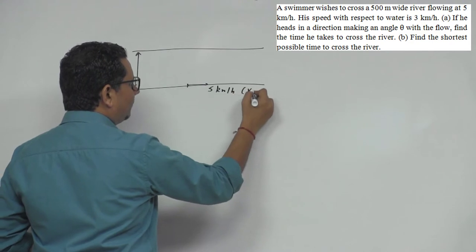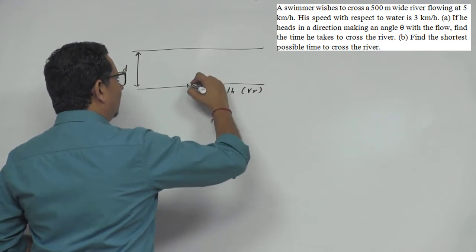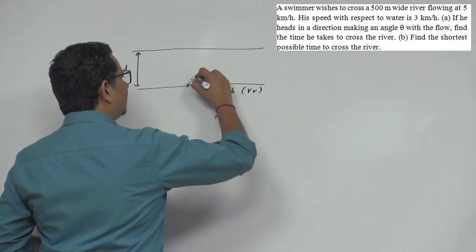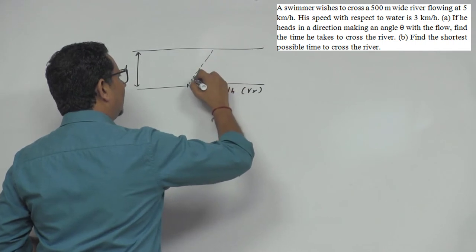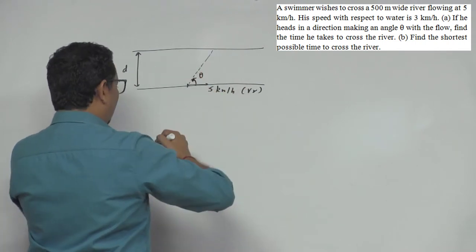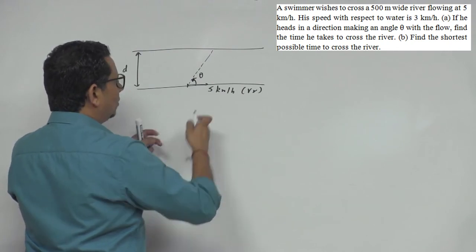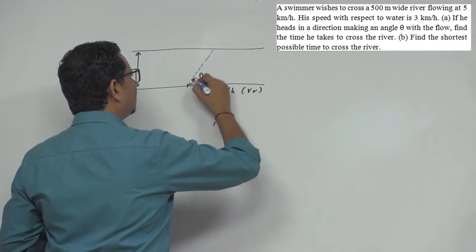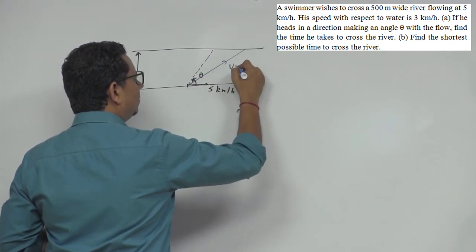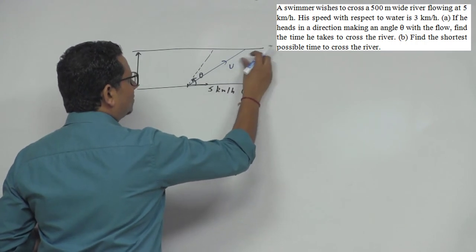The river is flowing at 5 km per hour. The boat travels at angle theta. Eventually because of the flow and drift, it will travel in this direction and reach here. So this will be equal to VMR, and this will be equal to VM.